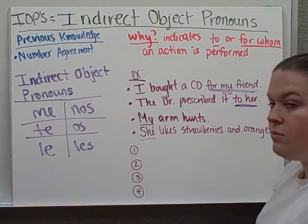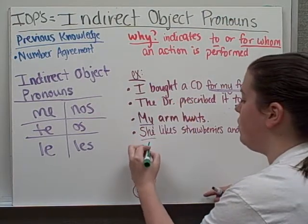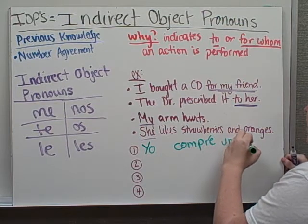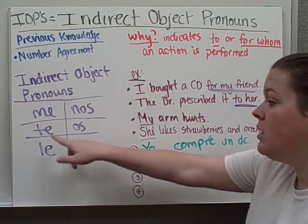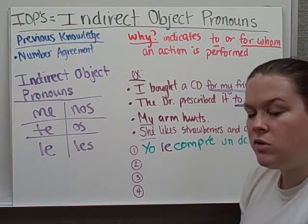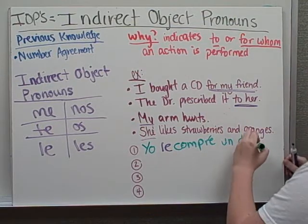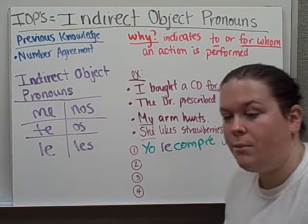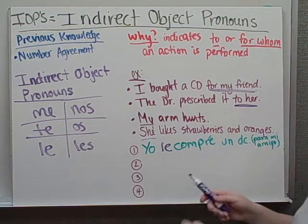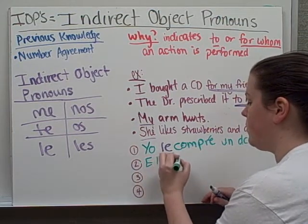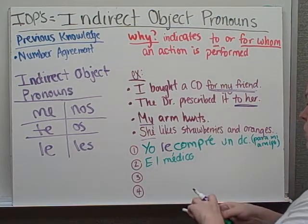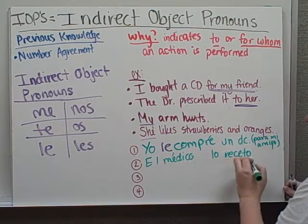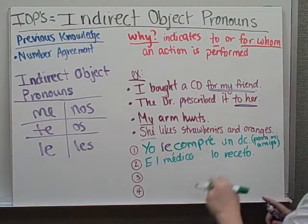Now we're going to write these in Spanish since we know what the indirect objects are. I bought: yo compré un disco compacto. Who did I buy it for? For my friend — him or her — so that would be le. And if I want to be more specific, I can add para mi amigo, but I don't have to. The doctor prescribed it to her: el médico — le recetó — to her, le.